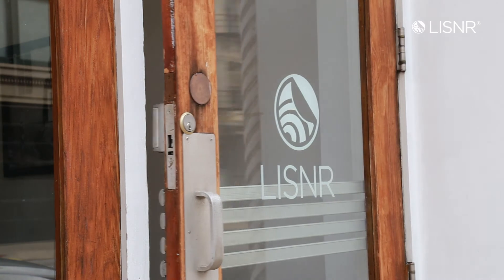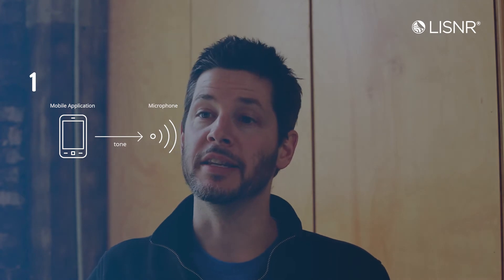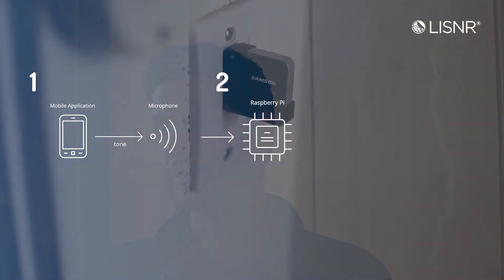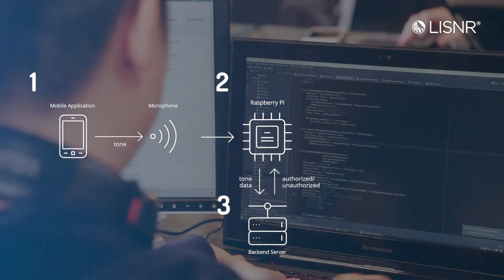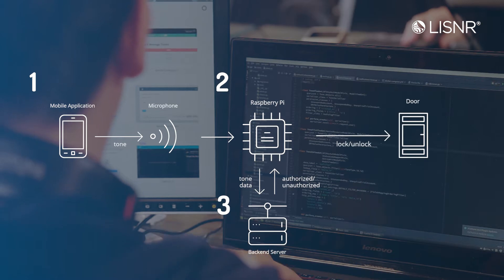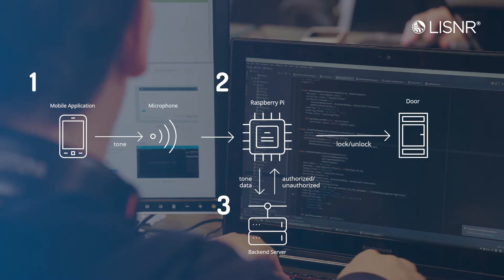Our authentication system has three main components. The application, which modulates the data and plays it as a tone. The demodulator, which in our case is a Raspberry Pi with a USB microphone attached to it. And the third part is the backend authentication server, which checks to see if the data that we received matches a valid user.